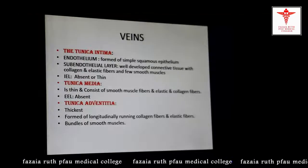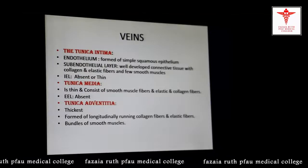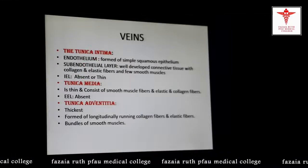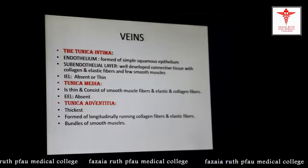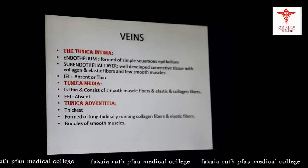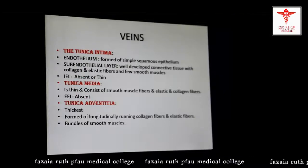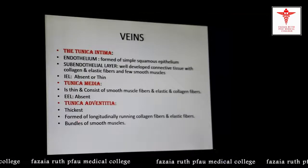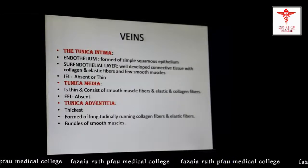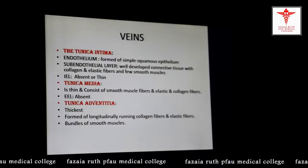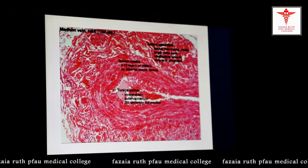Coming to the veins — they have the same basic three-layer structure: tunica intima, media, and adventitia. The intima has endothelium and a sub-endothelial layer, and the internal elastic lamina may be absent or thin. The tunica media is thin, consisting of smooth muscle fiber and collagen fiber, and the external elastic lamina is absent. The tunica adventitia is the thickest of all three layers, with longitudinally running collagen fibers, elastic fibers, bundles of smooth muscles, and vasa vasorum.